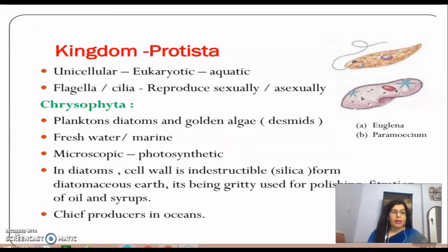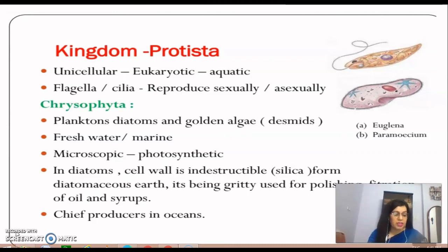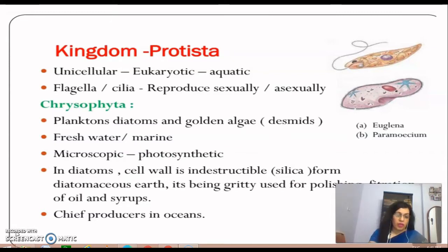Kingdom Protista is further divided into groups: chrysophytes, dinoflagellates, euglenoids, slime molds, and protozoans. We will start with chrysophytes.